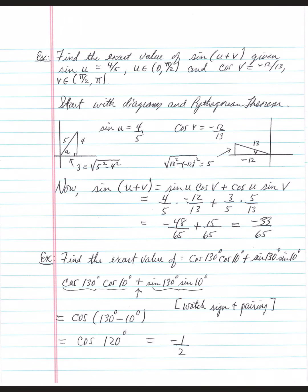Find the exact value of sine(u + v), given that sine(u) = 4/5 with u between 0 and π/2, and cosine(v) = −12/13 with v between π/2 and π. Let's start with diagrams and the Pythagorean theorem.